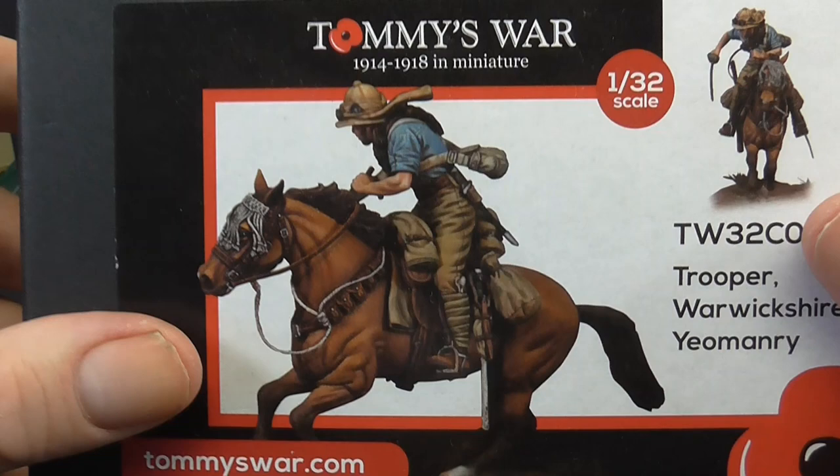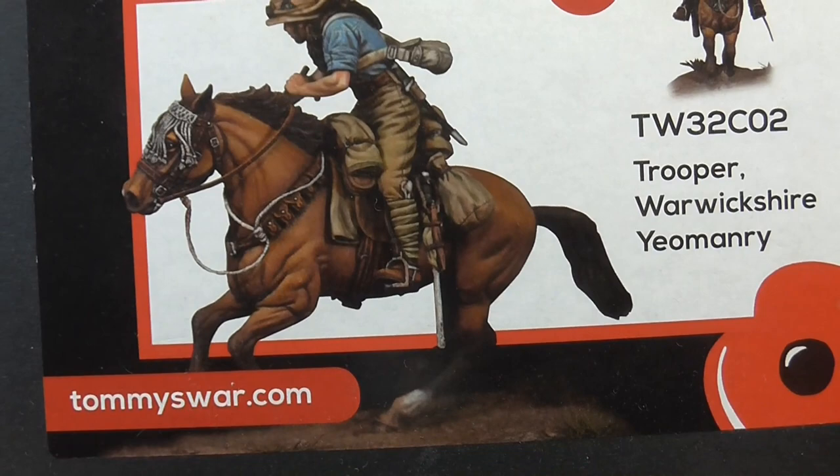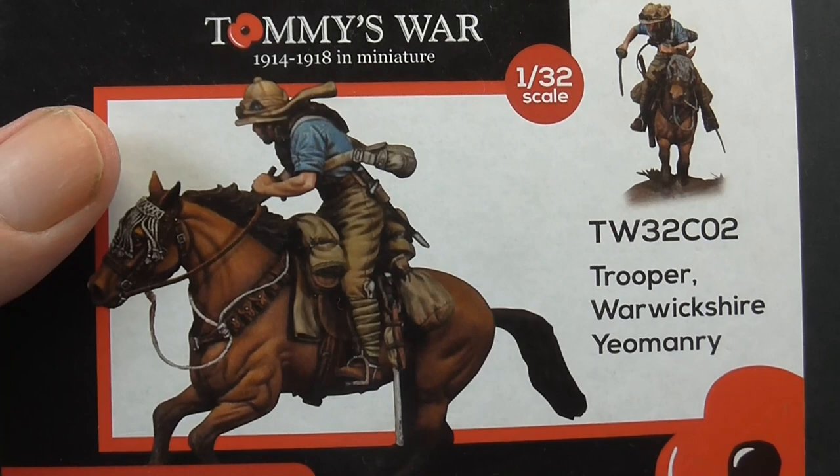If anybody's got a long memory you'll know I picked this up at Telford last year and I did do the Turkish soldier which I bought separately knowing that they actually put this together as a vignette. I mean obviously you can buy them separately which I did, but I just bought the Turkish soldier because I've got this as well.